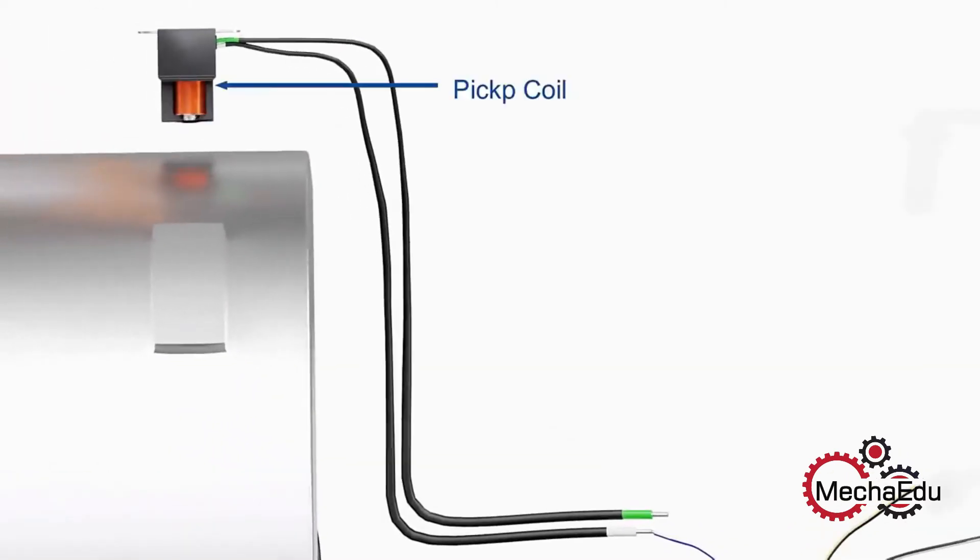Another component, known as a pickup coil, tells the CDI unit when to dump this charge. The pickup coil has a small magnet with a coil of wire around it. The flywheel has a small extrusion on its outer surface. As this extrusion approaches and passes the pickup coil, a small voltage is developed in the coil.